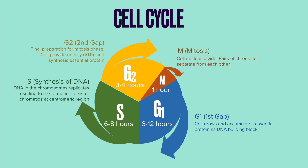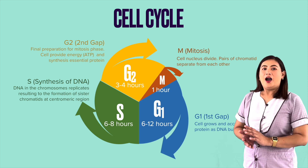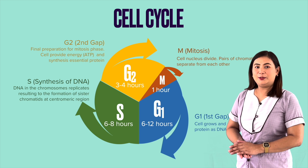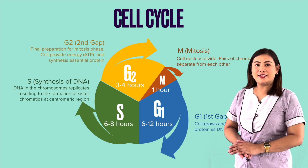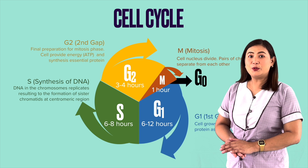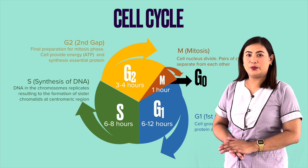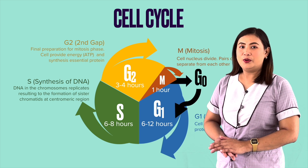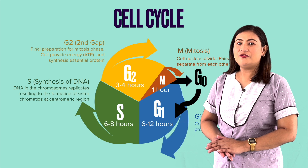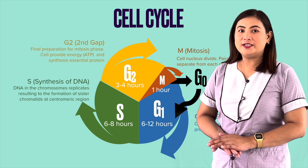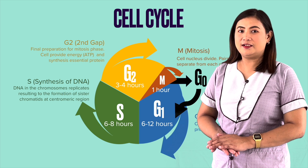After completing the cell cycle, the cell either starts the process again at G1, or exits the cycle through G0. From G0, the cell can undergo terminal differentiation. Let us elaborate each of the four stages of the cell cycle.